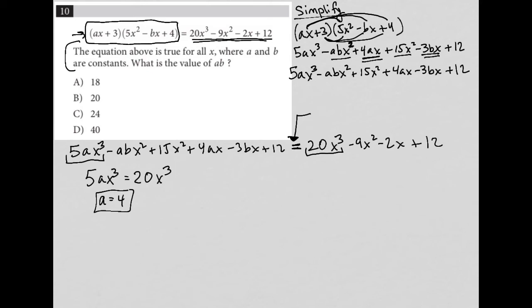And I have this negative ABX squared plus 15 X squared term on the left hand side. So what does that tell me? Well, negative ABX squared plus 15 X squared has to somehow equal negative nine X squared.